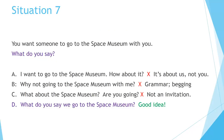The best answer is D: What do you say we go to the space museum? Good idea. What's wrong with the others? A. I want to go to the space museum. How about it? — It's about us, not you. Don't focus on yourself. Say 'Would you like to go to the space museum?' B. Why not going to the space museum with me? — The grammar is incorrect. 'Why not go?' Also, adding 'with me' sounds like you're begging them to go along with you. C. What about the space museum? Are you going? — This is actually not an invitation. You're just asking if they're going, maybe by themselves.